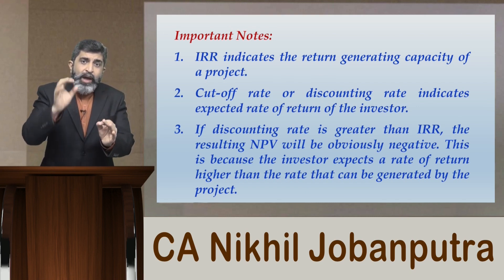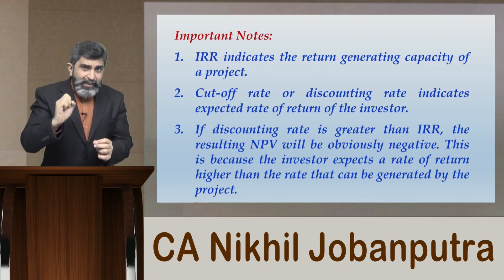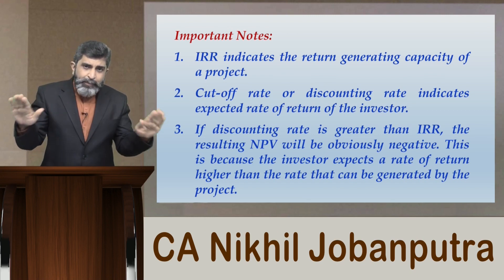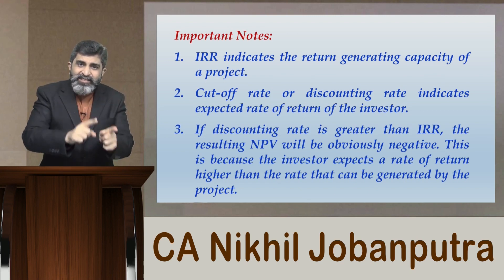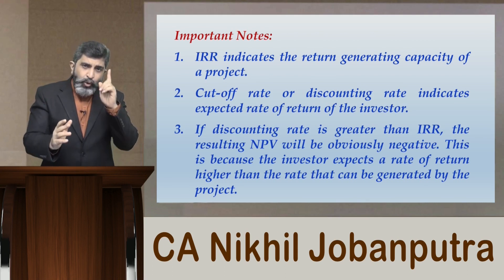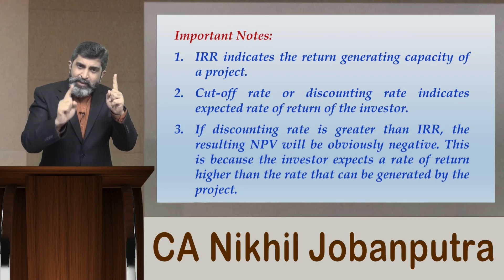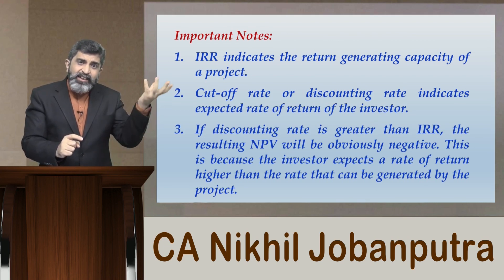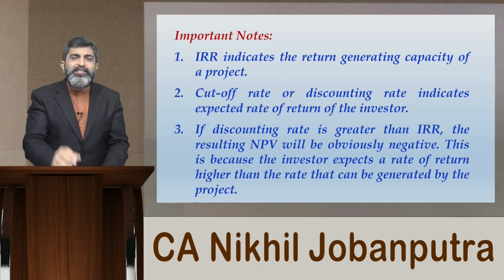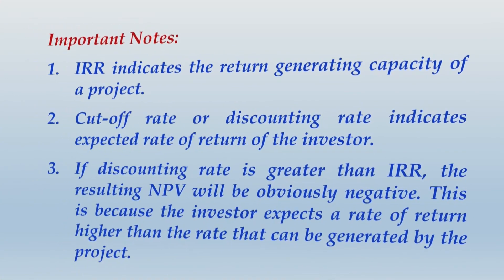When should you accept or reject a proposal on the basis of IRR criteria? When the discounting rate is greater than IRR, reject the project. When the discounting rate is less than or equal to IRR, definitely accept the project. If the discounting rate and IRR are the same, NPV will be zero. If the discounting rate is less and IRR is greater, NPV will be positive — both are indications of situations when the project is acceptable.